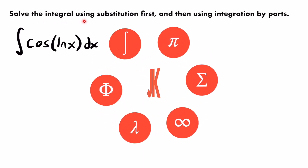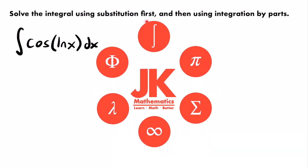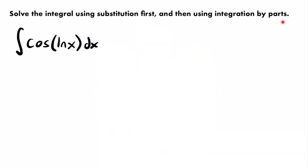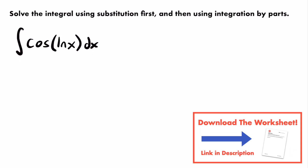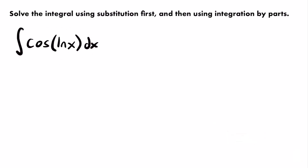We want to solve the integral using substitution first and then using integration by parts. We have the integral of cosine of the natural log of x dx. This integral might seem pretty complex at first, but we are given a hint: we need to use u-substitution first, and then we should be able to use integration by parts.